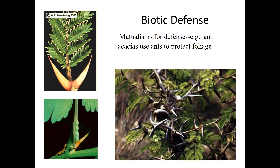Plants also have biotic defenses — we'll get to chemical defenses in a bit — but biotic defenses involve other species protecting them. These are the products of mutualisms with insects. In this case, acacia ants live inside little hollow thorns on the plant. If you touch the plant, ants will swarm out and bite, consume, attack, and sting anything touching it. They will also cut away any other plant that's touching the host plant, removing predators and competitors.